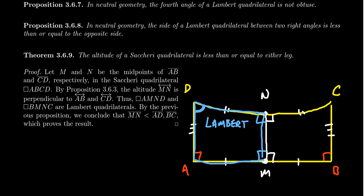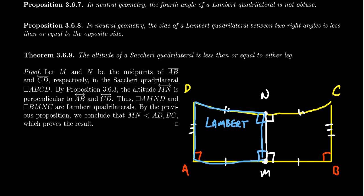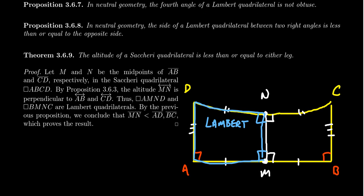If the summit angle of a Saccheri quadrilateral is acute, that means there is a Lambert quadrilateral with an acute fourth angle, and it also goes the other way around. If you start with a Lambert quadrilateral, you can copy it using the triangle translation property — quadrilaterals are just two triangles glued together — and construct a Saccheri quadrilateral. So in neutral geometry, the fourth angle of a Lambert quadrilateral is not obtuse: if you double a Lambert quadrilateral, its fourth angle becomes the summit angle of a Saccheri quadrilateral, and we've already proven those can't be obtuse.